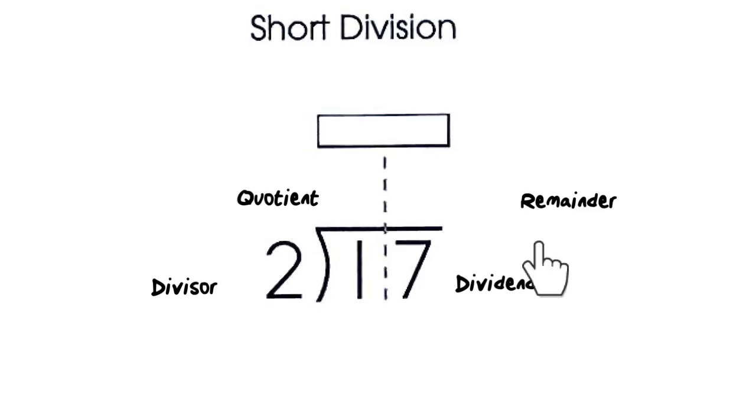Okay, our last term is called the remainder. The remainder is the amount left over after dividing this number into 17. When we have a remainder, we will write the letter R in this area, and then the number that remains. Let's go ahead and work the problem out now.